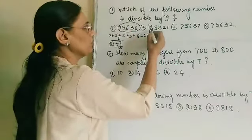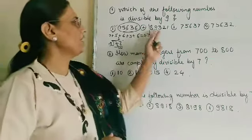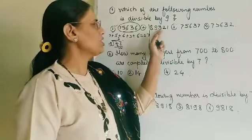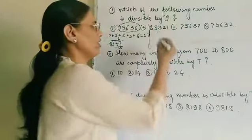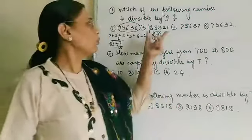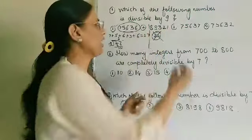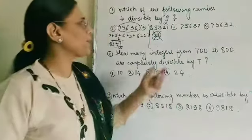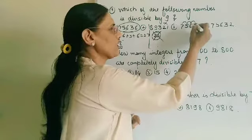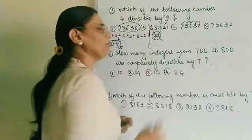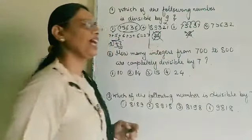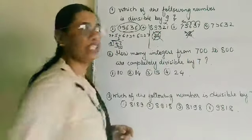Now the other option: 8 plus 9 is 17, 17 plus 3 is 20, plus 2 is 22, 22 plus 1 is 23. So 23 is not divisible by 9, and therefore this number is not divisible by 9 — the second option is incorrect. Let us take the next: 7 plus 5 is 12, 12 plus 6 is 18, 18 plus 3 is 21, 21 plus 7 is 28. So 28 is not divisible by 9, and therefore this option is incorrect.